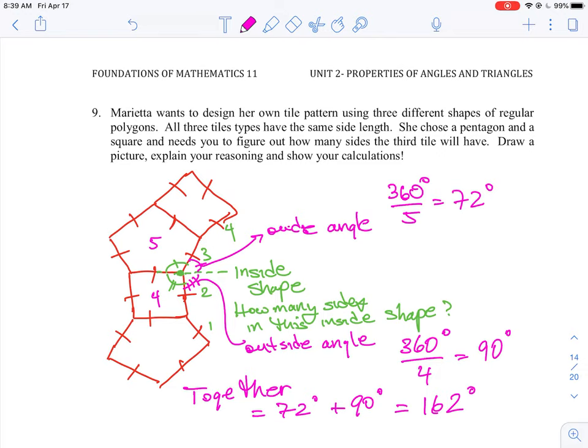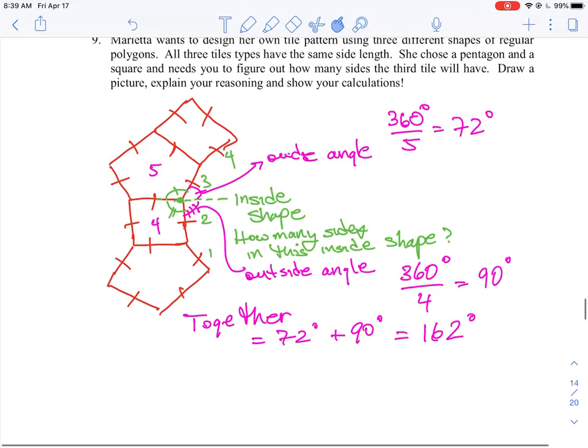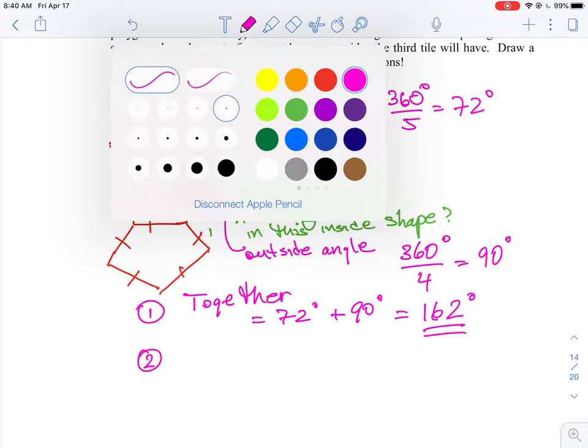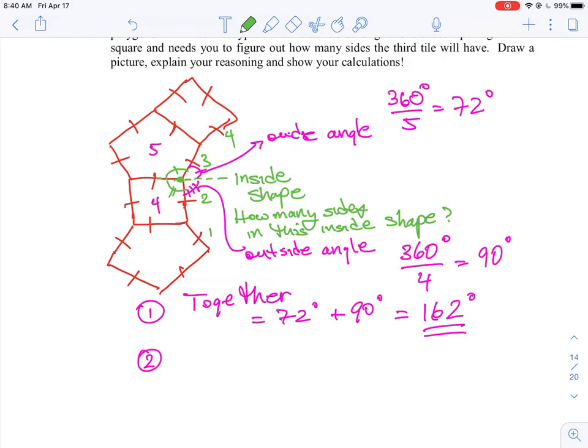That gives us one piece of this puzzle here, but now what we're really asked to find is how many sides does that shape have. We can calculate that because that outside angle of 162 degrees is actually the inside angle of the shape that is made up in the inside, that would be our green part.